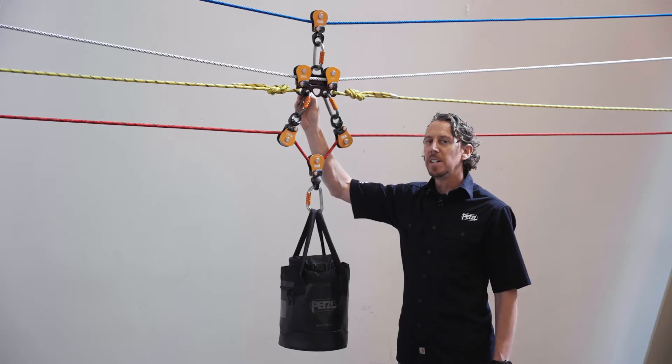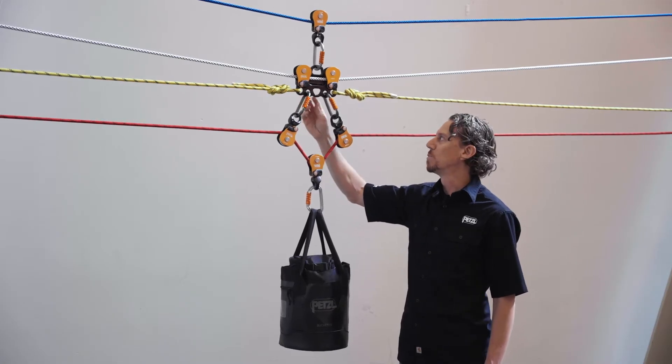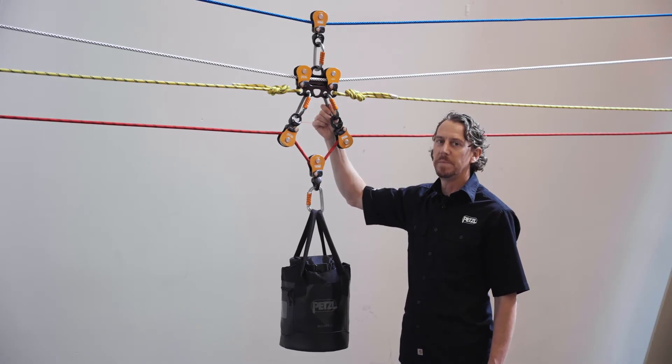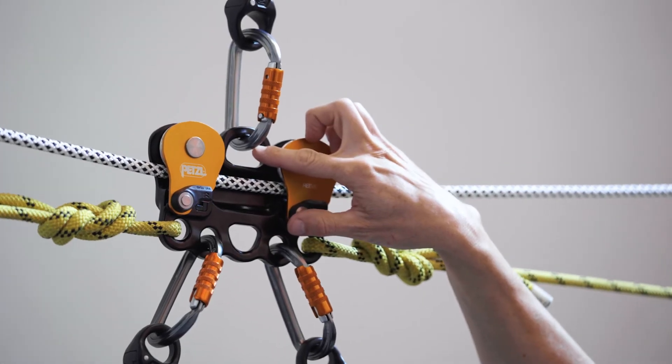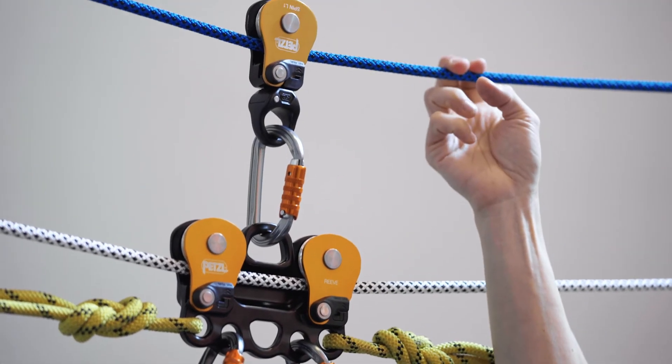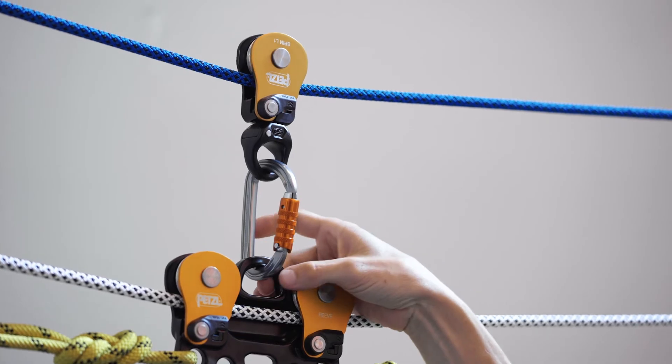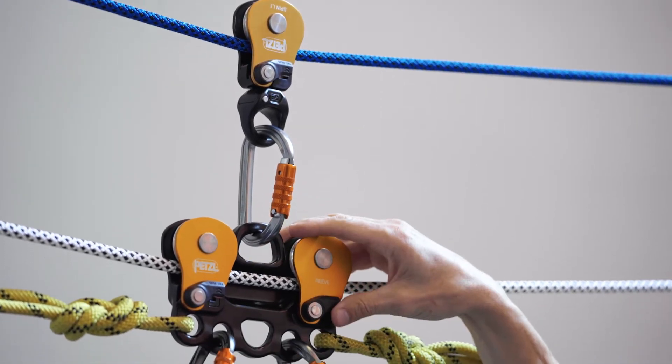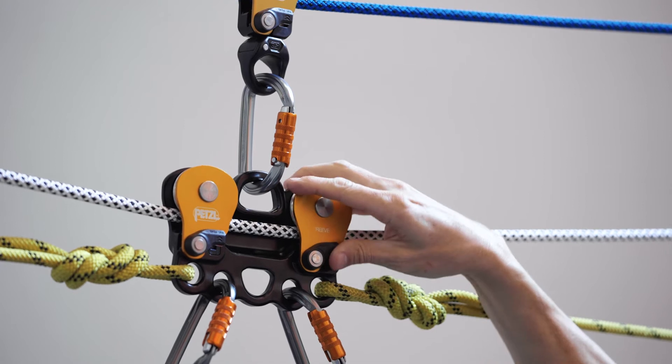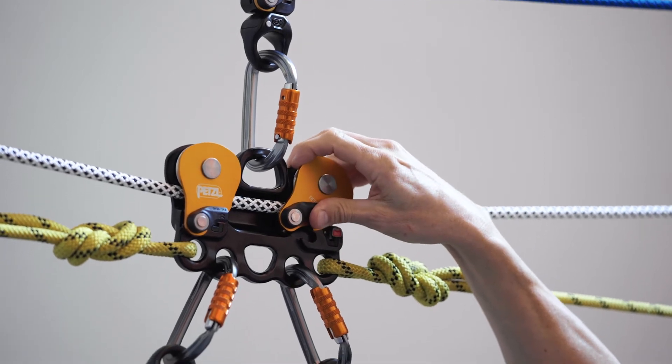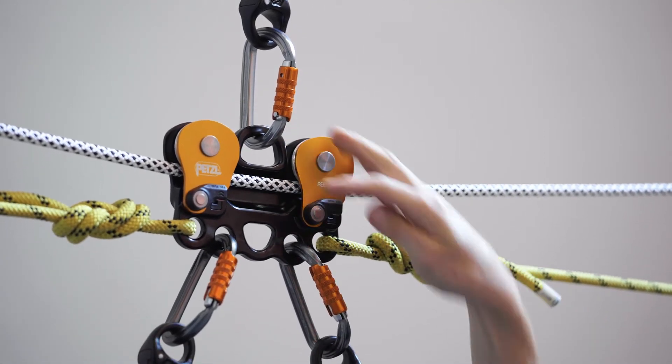These holes are 19 millimeters in diameter, which allows most carabiners to rotate through them. The upper attachment hole can be used to connect a second track line or for connecting secondary control lines. The large diameter of this hole still allows the pulleys to be opened, even with a carabiner connected.